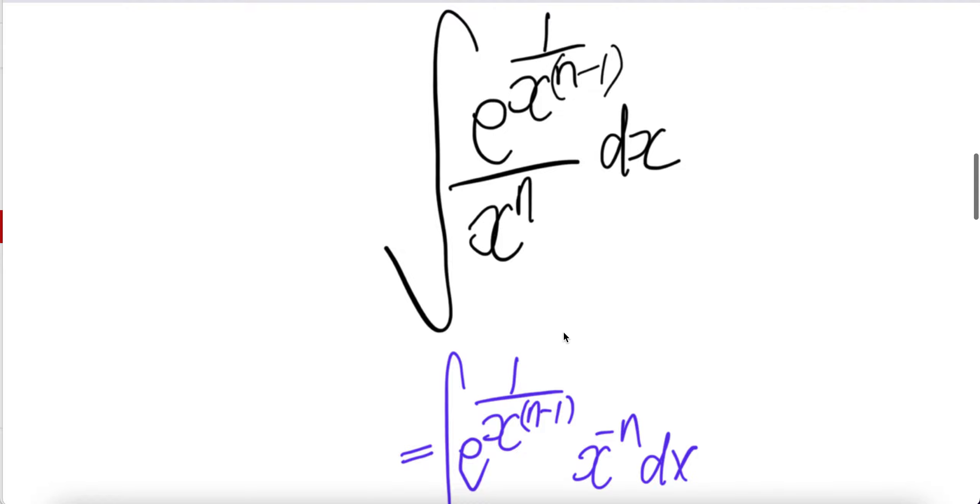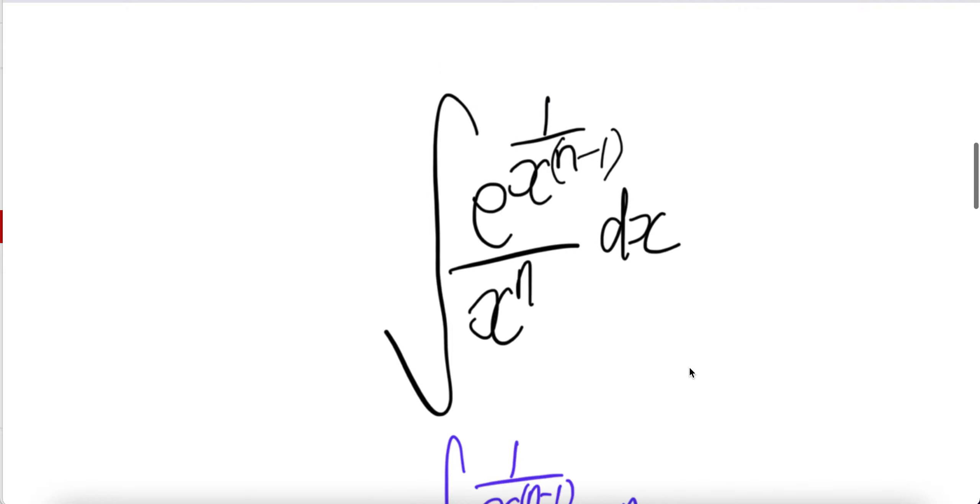Now let's write 1 over x to the power n as x to the power negative n dx. Now let us write this as x to the power negative of n minus 1.